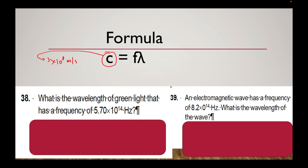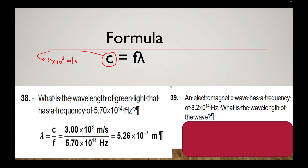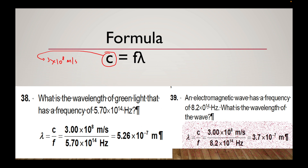So you might get a question that asks for the wavelength of a light which has a frequency. You're expected to know that you would use the speed of light. So you'll do 3 times 10 to the power of 8 divided by the frequency, and then you'll get your answer. There's another example here — you have a different frequency. Same way, you do the speed of light divided by the frequency, and you have your wavelength.